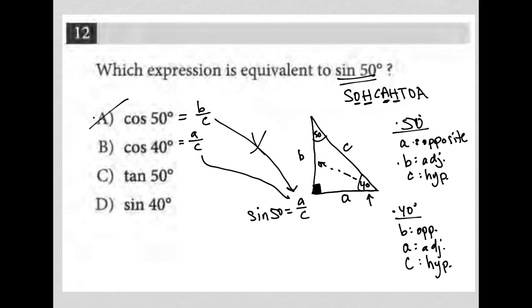A over C is equal to A over C. Those are the same thing, which means sine 50 is equal to cosine 40, which makes choice B the correct answer.